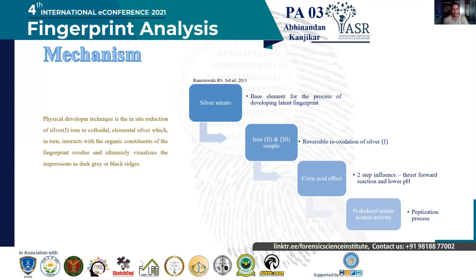The mechanism behind the physical developer method is the in-situ reduction of silver ions to colloidal elemental silver, which interacts with the fatty acid and lipid molecules of the fingerprint and is ultimately visualized as dark gray or black ridges. This technique makes use of four ingredients: an aqueous solution of iron salts as the redox couple, citric acid as a buffer, and dodecylamine acetate as a cationic detergent.